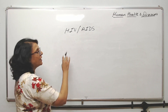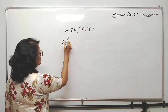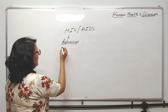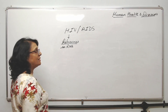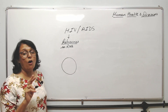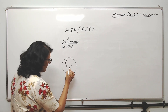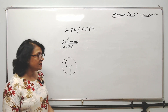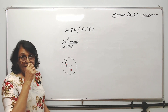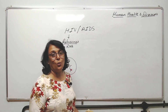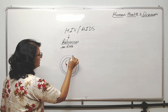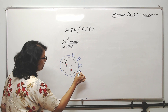HIV is a retrovirus, meaning it is an RNA virus — specifically it has single-stranded (SS) RNA. The virus has two layers of capsid, two single-stranded RNAs, and associated with every RNA there is reverse transcriptase. There is one more outer layer — a capsule — with glycoproteins on its surface.